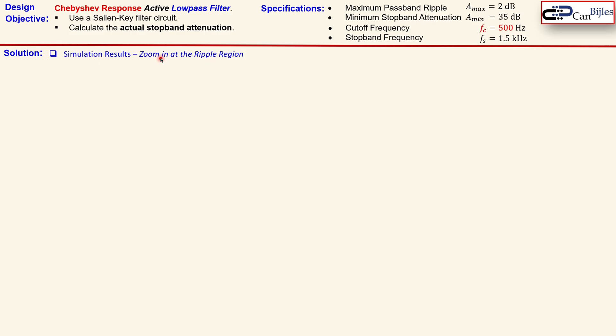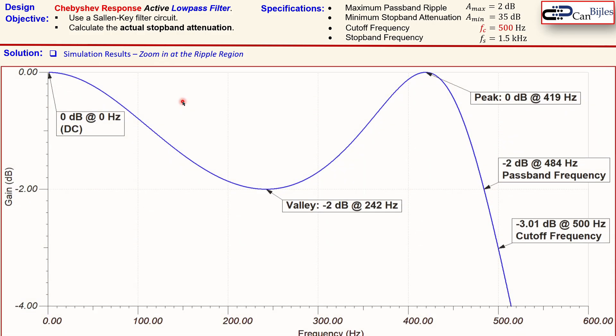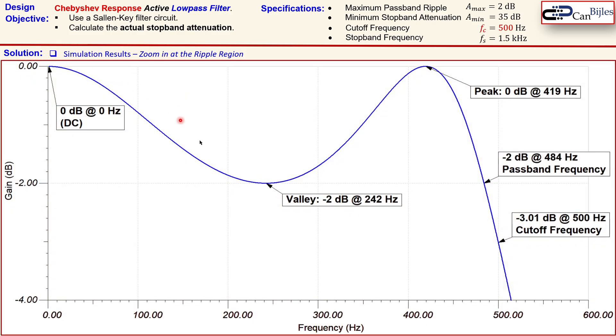Let's now go to the simulation result, zooming in that ripple region. That is very important, because now we see the complete ripple region. You see here now 0 to up to minus 4 dB, so it's completely zoomed in, and then here from 0 to 600 Hz. This is now, by the way, in linear scale, just to make this plot easier to follow.